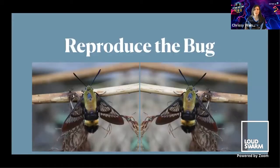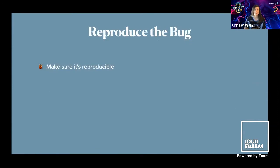The first step is to reproduce the bug. If the bug was found by someone else, the first step is to see it for yourself. This allows you to confirm the behavior and help you make sure that the bug is actually fixed when you put in the code to fix it. Make sure it is reproducible — it's possible it might only be a problem for the person that reported the bug, such as if it's a browser plugin.